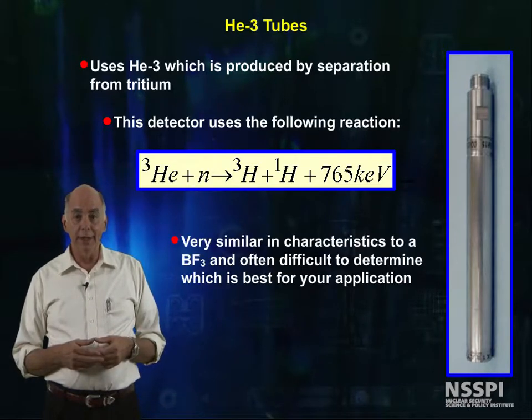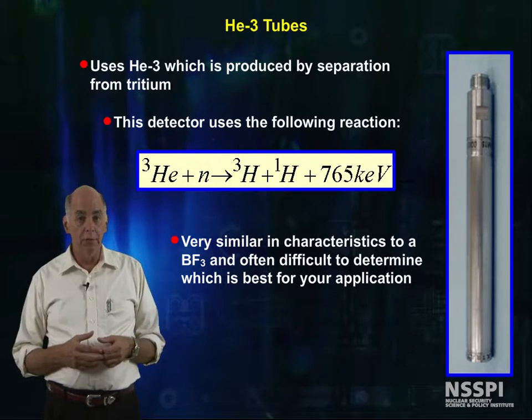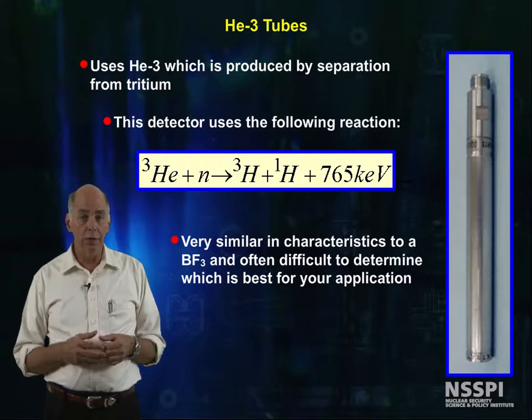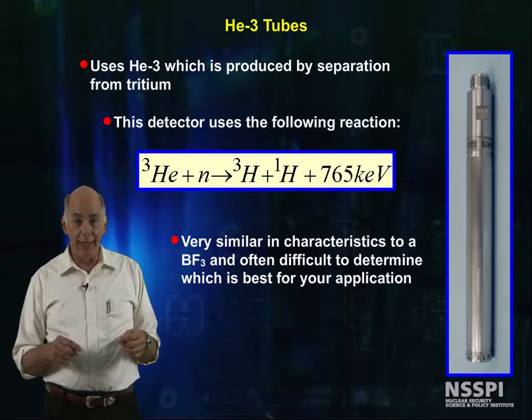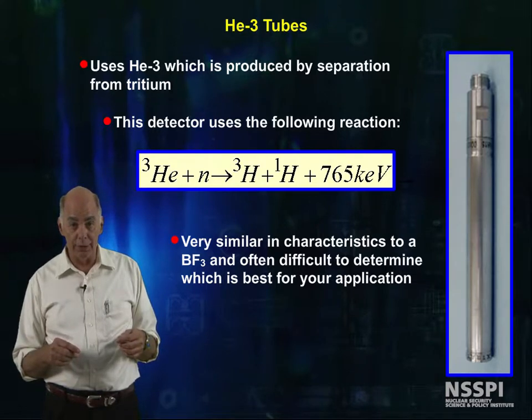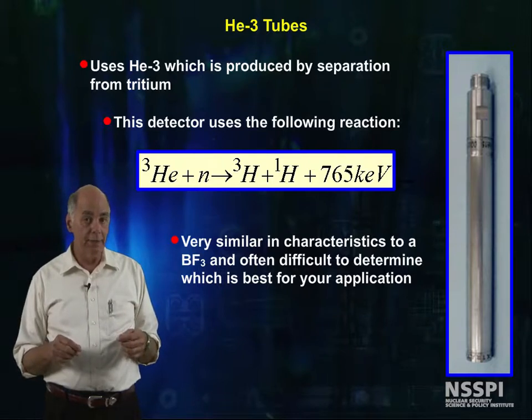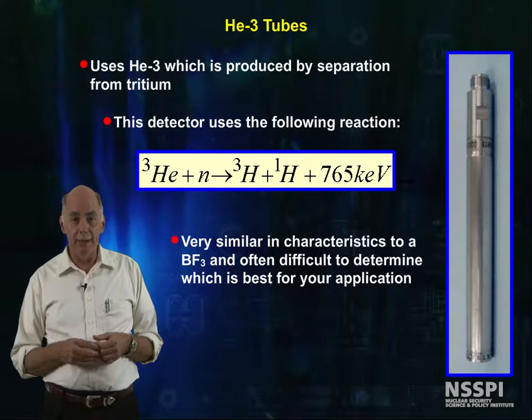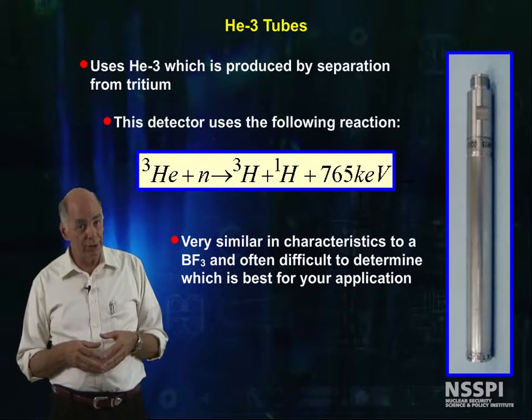Helium-3 detectors have very similar characteristics to a BF3 tube, but one difference is that the helium-3 itself works as a wonderful counting gas, so you don't have to add another gas to help with the counting characteristics. But they are generally more expensive than BF3 counters. Sometimes extra gases are added to more quickly stop the reaction products, but that's a different story.